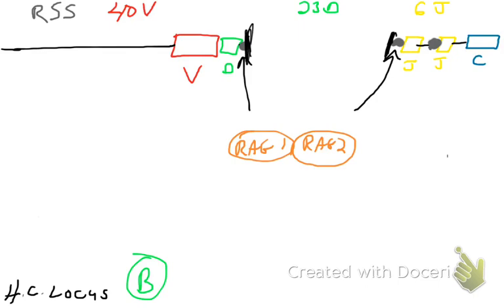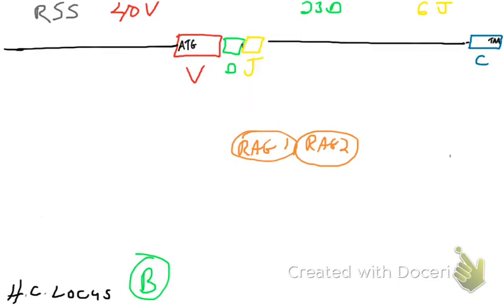They're going to cut the DNA and they're going to stitch it together. So what you're going to end up with is a V gene segment hooked up to a D gene segment hooked up to a J gene segment. And this occurred using the RAG enzymes.